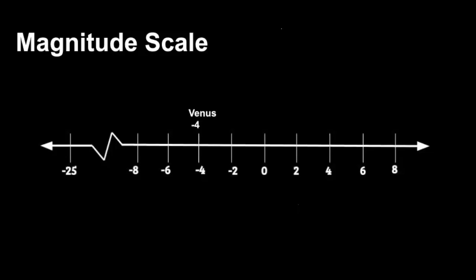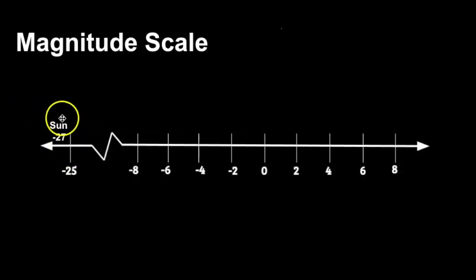Venus, a planet, has a magnitude of negative 4, which tells us Venus is really bright in the sky. I can always tell where Venus is because it is the brightest object in the sky next to the Sun, which has a magnitude of negative 27. So it seems counterintuitive that a negative number means brighter, but remember — it's that inverse scale.